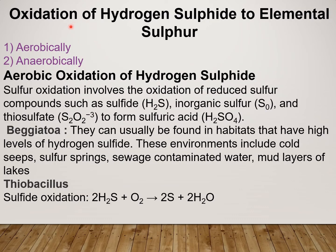The second step is oxidation of Hydrogen Sulphide to elemental Sulphur. This oxidation takes place by two ways — one aerobically and the second anaerobically. Sulphur oxidation involves the oxidation of reduced Sulphur compounds like Hydrogen Sulphide, inorganic Sulphur, and thiosulphate, which on oxidation results in production of Sulphuric acid.